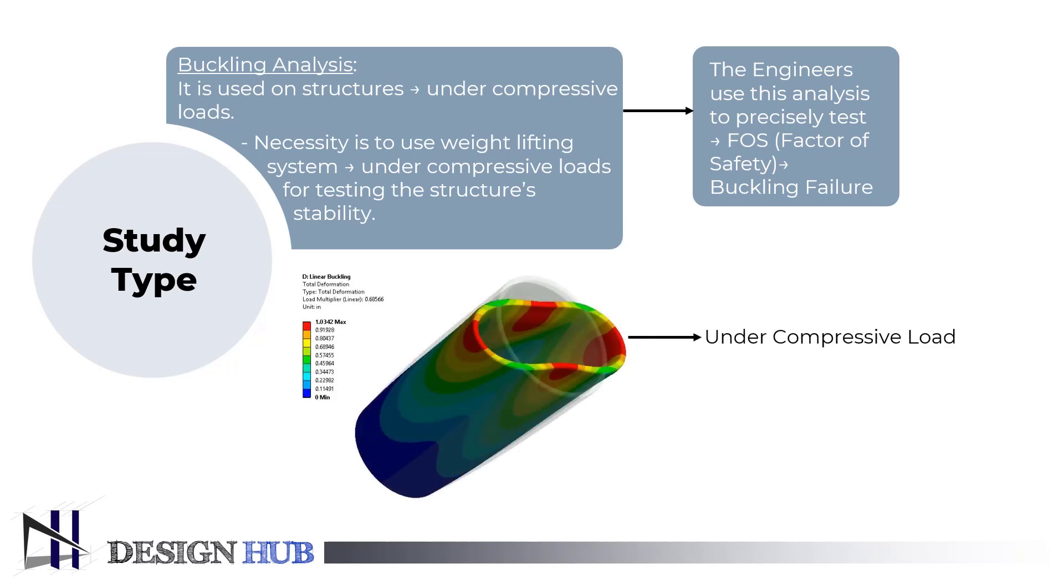The most prevalent buckling analysis is linear buckling analysis. Contrarily, the non-linear approach provides more reliable solutions than linear buckling. Linear buckling analysis is the type of buckling analysis used in finite element analysis. It is used to precisely test the factor of safety against buckling failure of a design by analyzing load-bearing structures that are subjected to compressive forces.